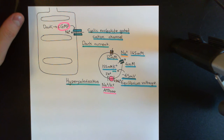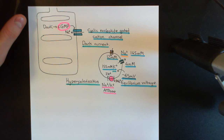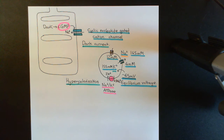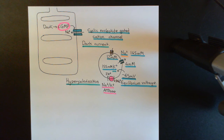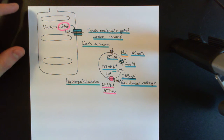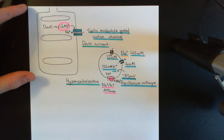Before we go on and discuss how that hyperpolarization is actually going to be transmitted onto the bipolar cell and then onto the ganglion cell, I want to firstly finish the story for rod photoreceptors. I want to talk about how this signalling pathway will be turned off after the light has gone. In addition, I want to then talk about how this is going to occur in cones, and then we'll talk about how the signal is going to be passed along. So firstly, how is this signal going to be turned off?